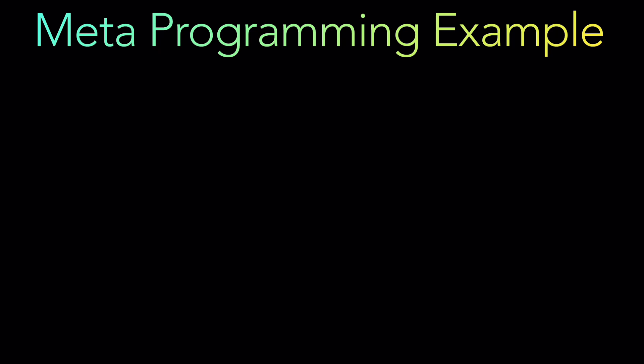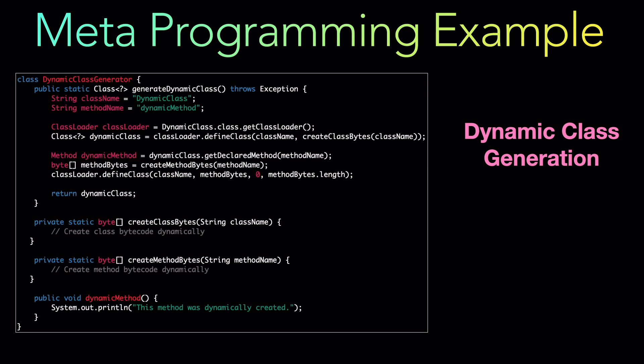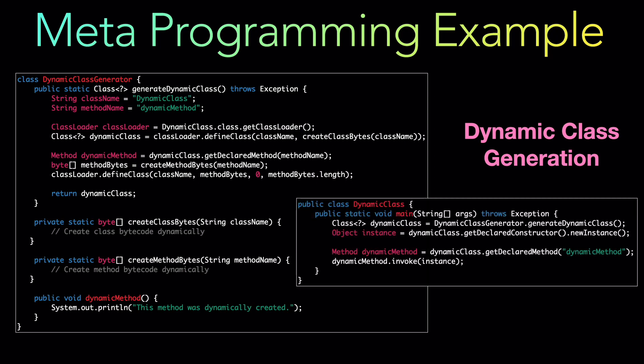Now let's take a look at metaprogramming examples. The first is dynamic class generation. In this example, the dynamic class demonstrates the usage of a dynamically generated class. The dynamic class generator generates the class and adds a dynamic method to it. java.lang.ClassLoader is used to define and load the dynamically generated classes, and finally the method is invoked using reflection. That is dynamic class generation.